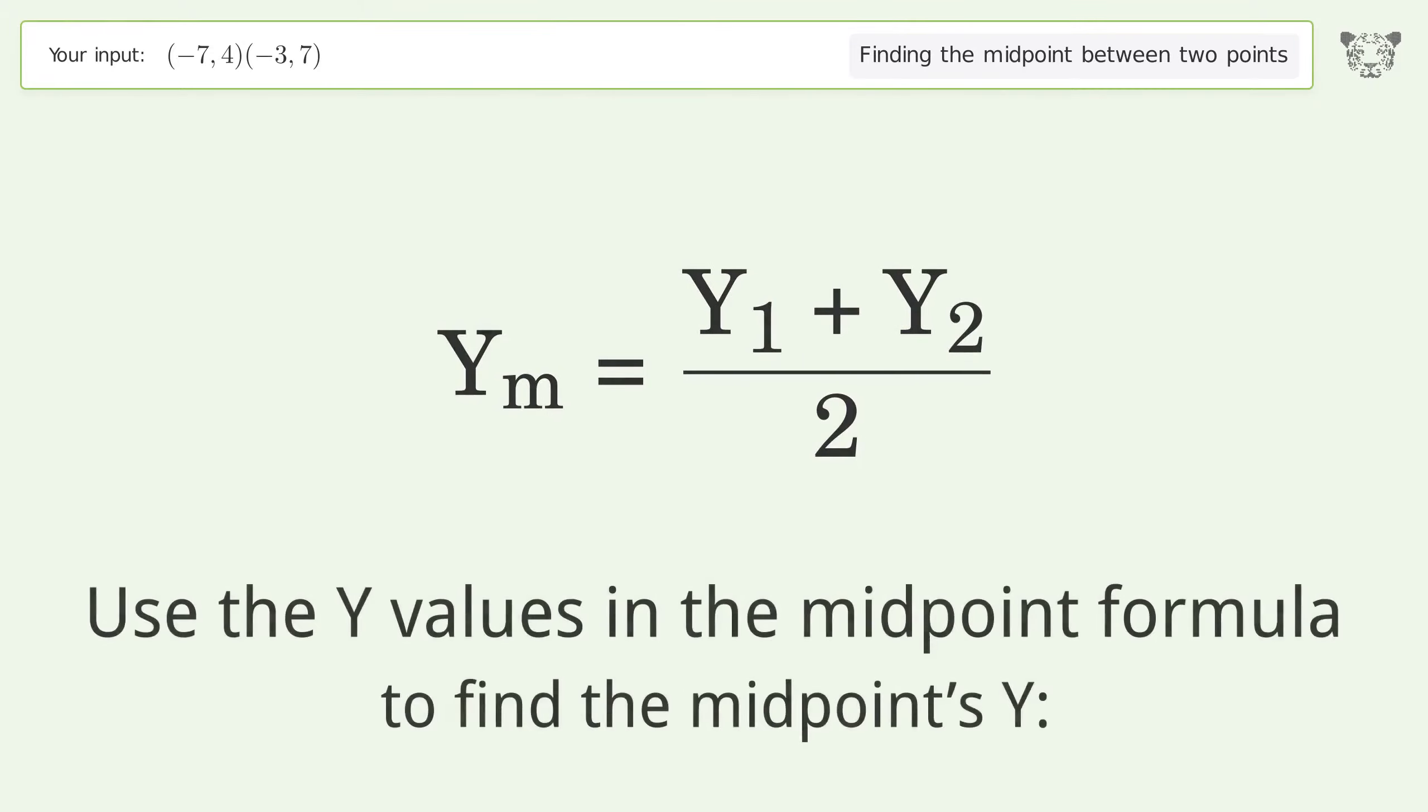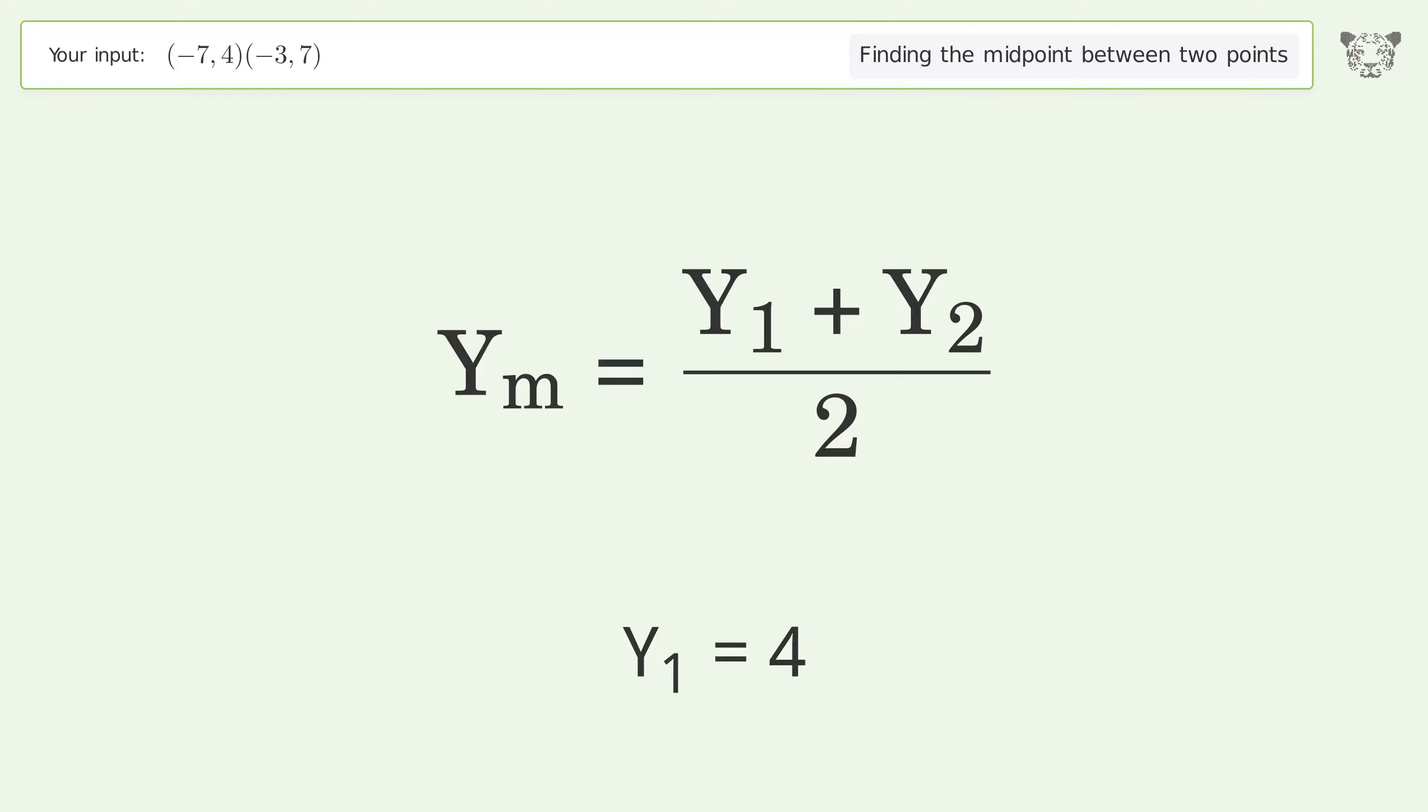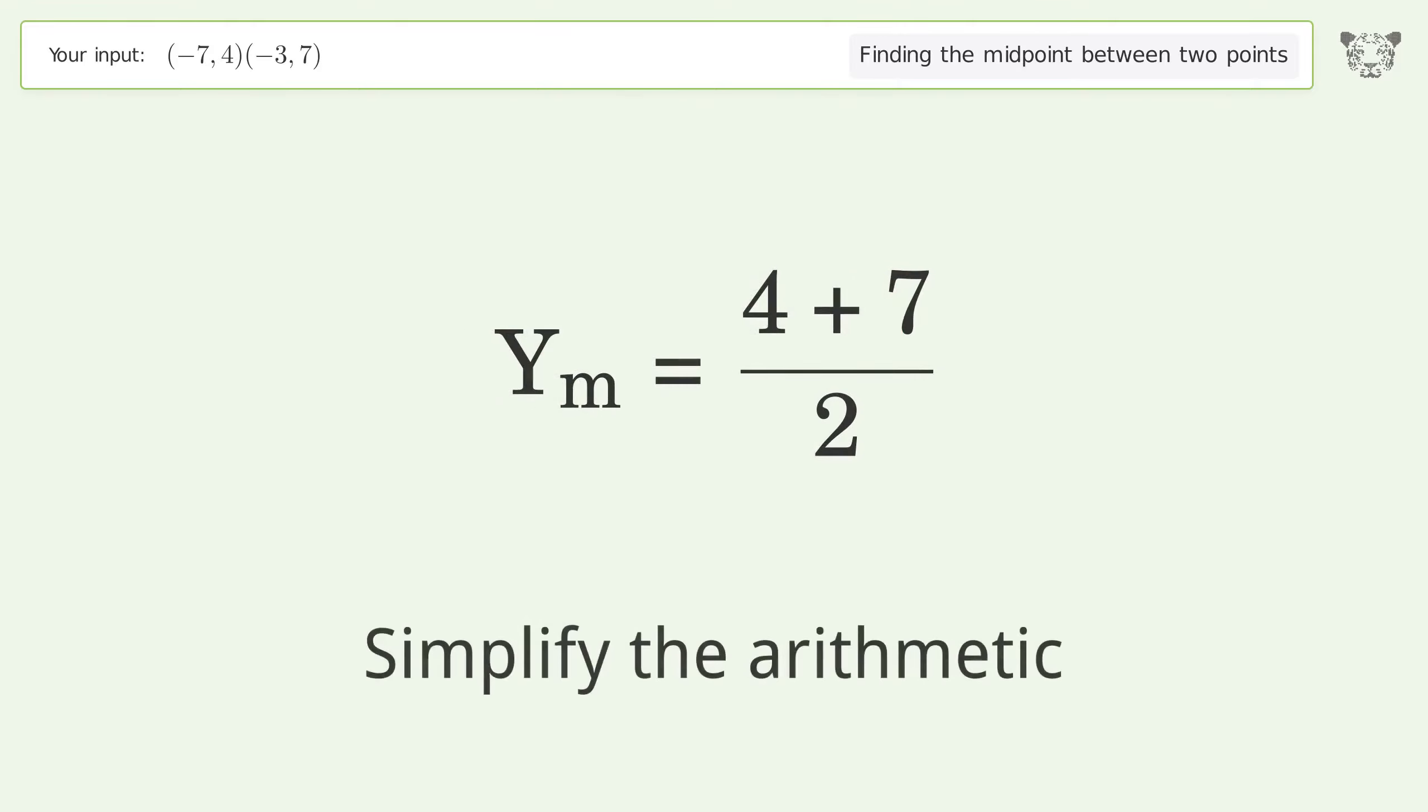Use the y values in the midpoint formula to find the midpoint's y. y1 = 4, y2 = 7. Simplify the arithmetic.